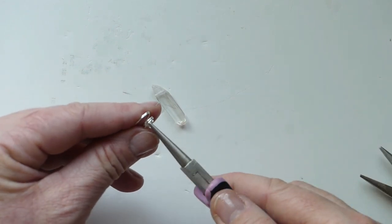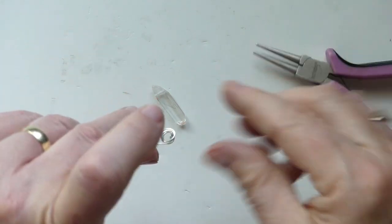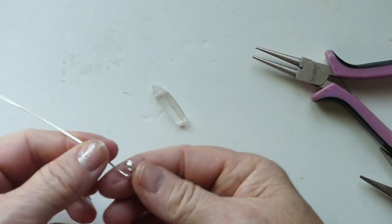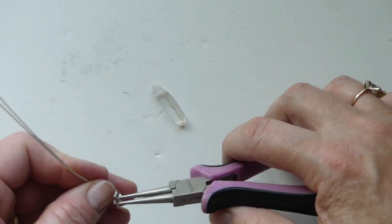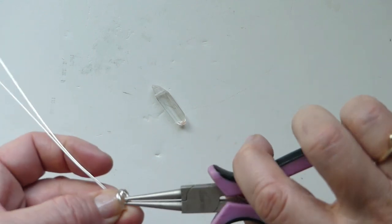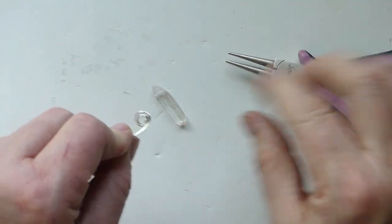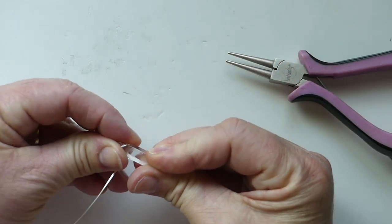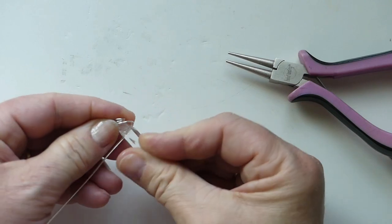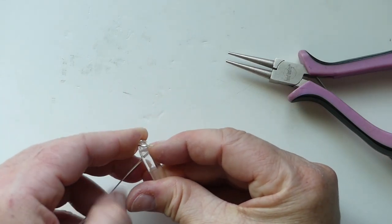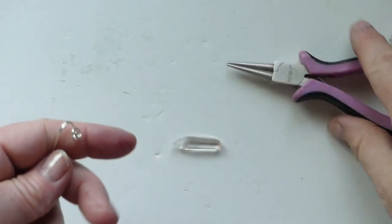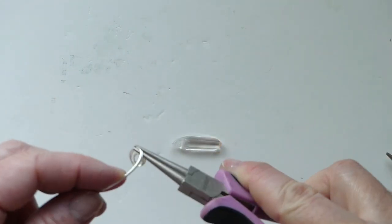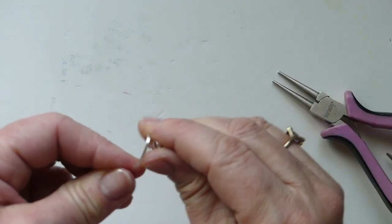And I try and do a few layers or a few coils so that it sits further up on our crystal point. And then pop it in there. Kind of gives you a size. Gives you an idea of how well it's going to fit in there.